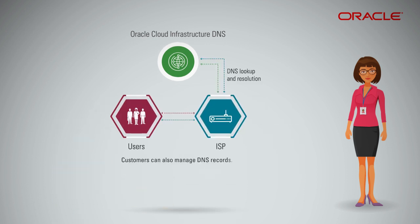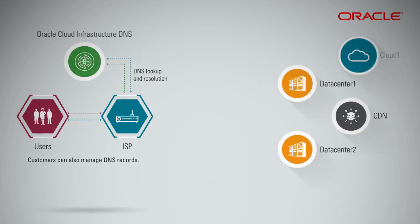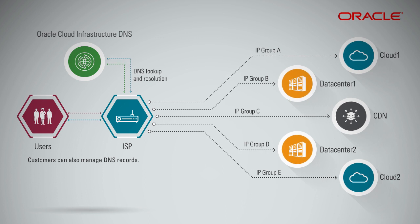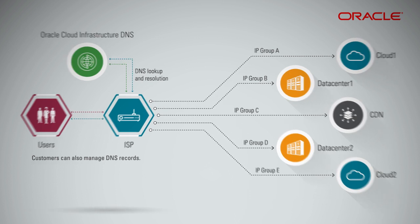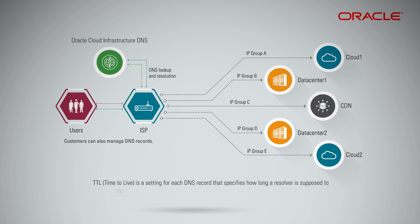Customers can also manage DNS records, which are domain names mapped to IP addresses. Domain names can be cloud or non-cloud resources. TTL, or time to live, is a setting for each DNS record that specifies how long a resolver is supposed to cache or remember the DNS query before the query expires and a new one needs to be done.